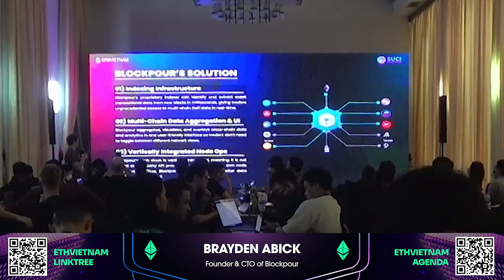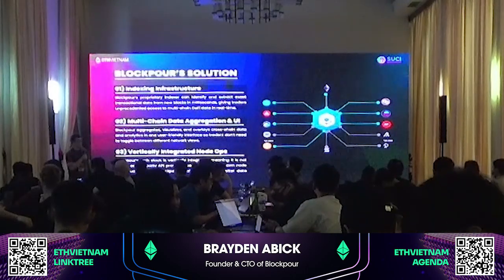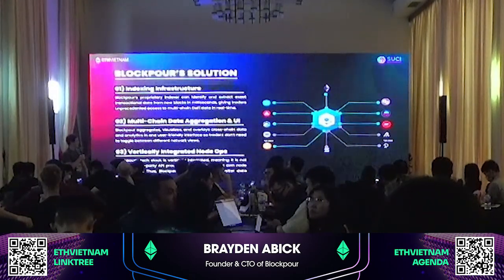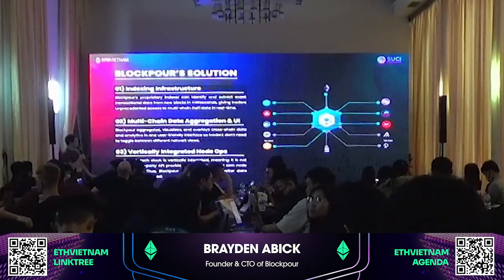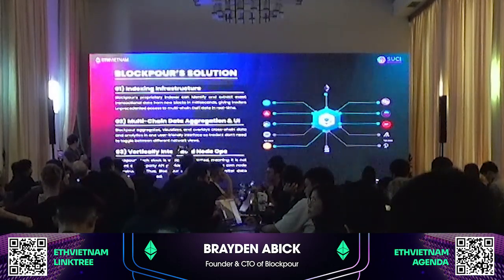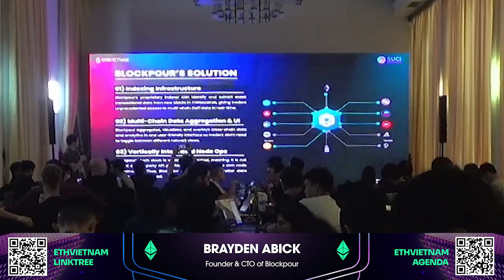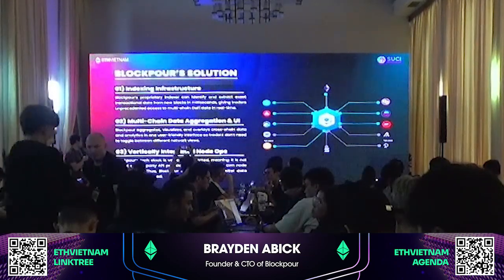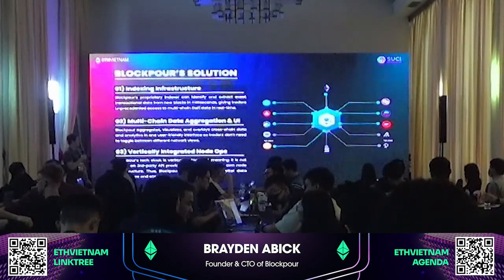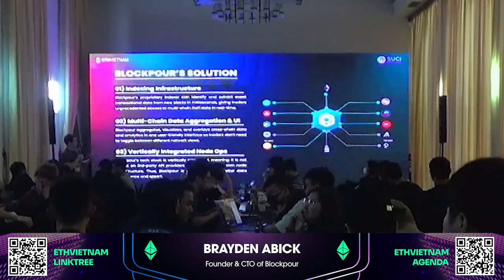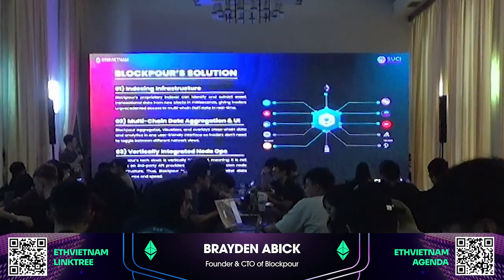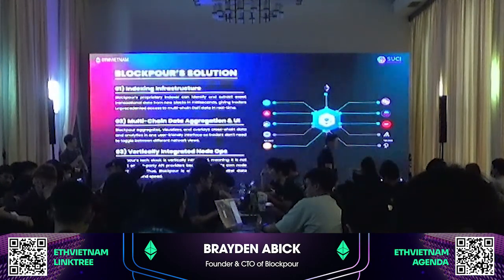The second point is around blockchain data aggregation and UI. As a user, if you want to see what's happening on the Ethereum network, you might have to go to one website. With BlockCore, everything is aggregated in one place, so with our APIs you can actually see the price of wrapped Ethereum across all these networks instead of just one. The third point is vertically integrated node ops. BlockCore runs its own node infrastructure — archived nodes — which gives us full access to all this data in real time. We're also able to query data going back to the Genesis block. So if you're a trader and you want to back-test trading strategies, you can use our APIs to see historic data and historic trades.